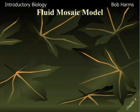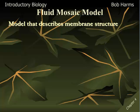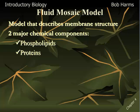Biologists describe the structure of what the membrane looks like by what's called the fluid mosaic model. This model has been around for a good 30 years or so, and it describes this structure as being composed of basically two major chemicals — two of our macromolecules. One macromolecule are the fats or lipids that make up the membrane, a specialized fat called a phospholipid. The other major component, not surprisingly, are proteins. So we're going to look at our phospholipids and our proteins and how they combine to make our selectively permeable membrane.